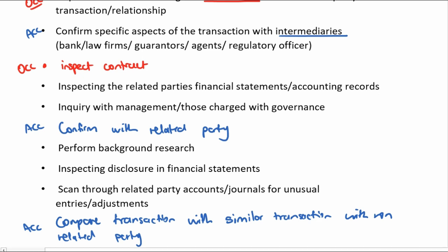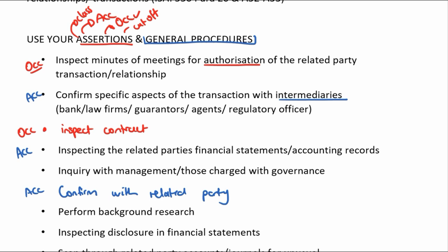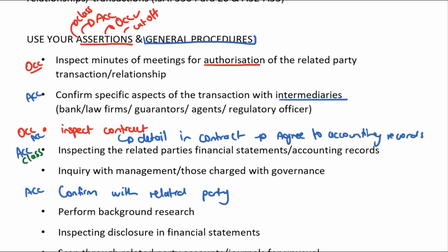Inspecting the related party's financials and accounting records to see that it actually matches on the other side is going to help with accuracy as well as classification. If there are any calculations, recalculating is going to be important for accuracy. Agreeing the terms in the contract helps with occurrence, but auditing the detail in the contract and agreeing it to the accounting records helps with the accuracy elements — and that covers accuracy and classification.